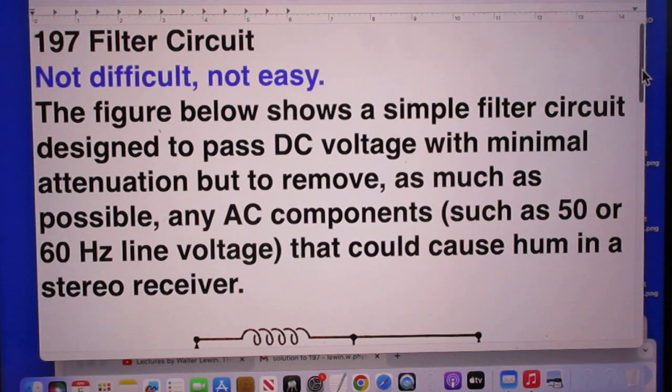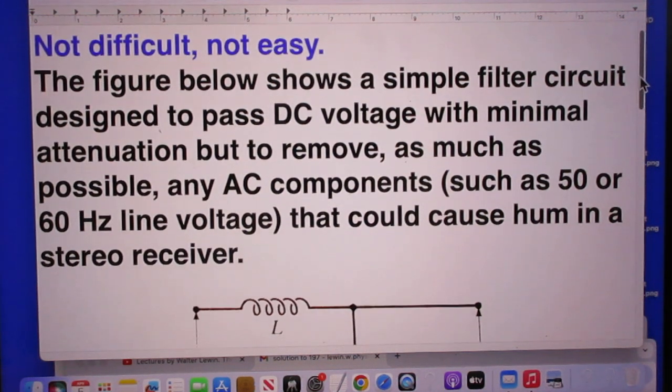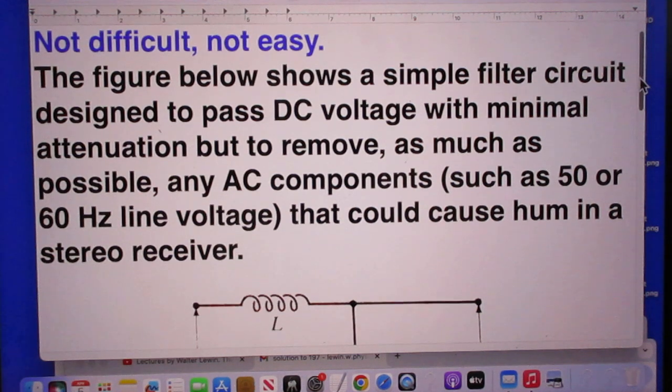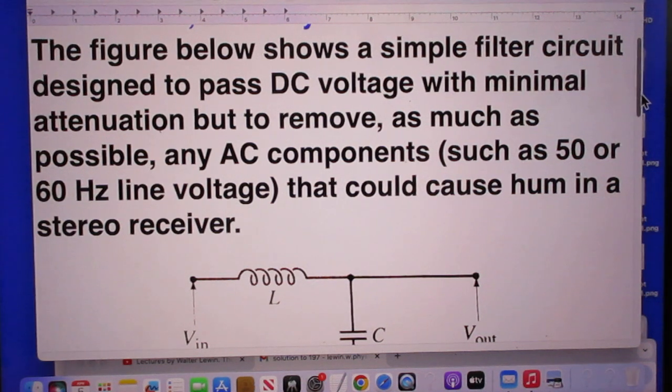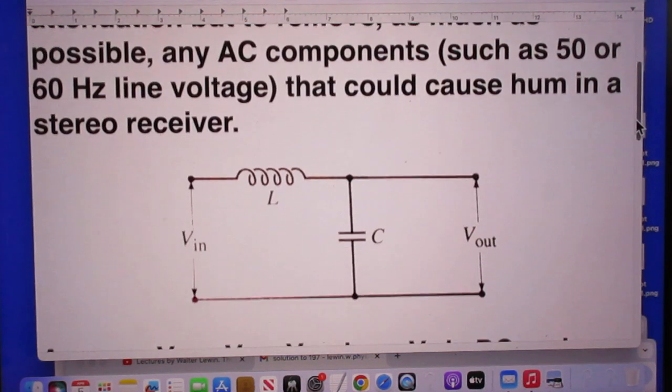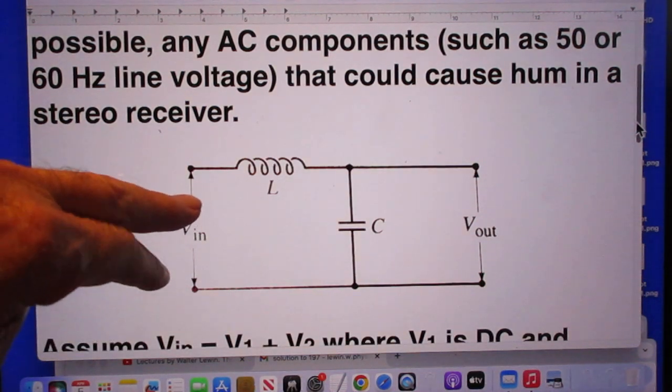It's not difficult but it isn't easy either. The figure below shows a simple filter circuit designed to pass DC voltage with minimal attenuation but to remove as much as possible any AC components, such as 50 or 60 Hertz line voltage that could cause hum in a stereo receiver.